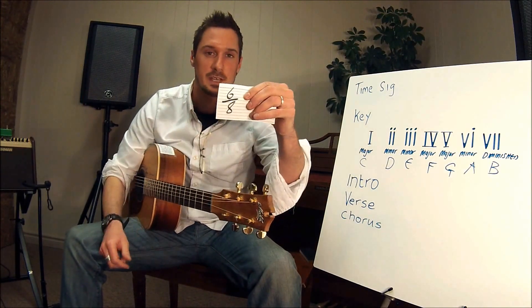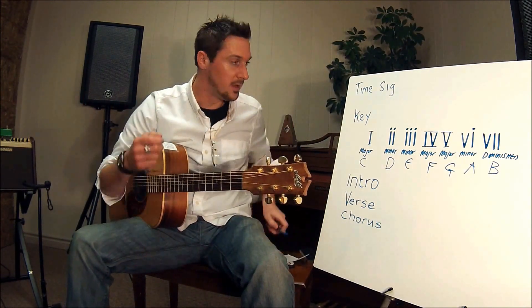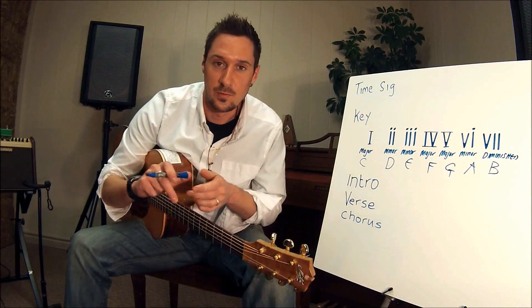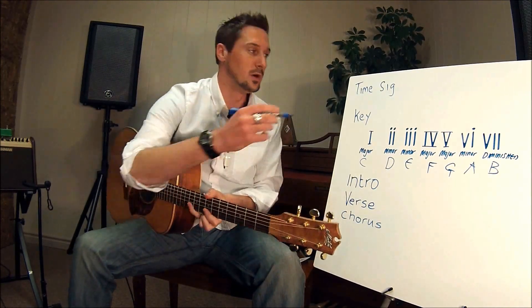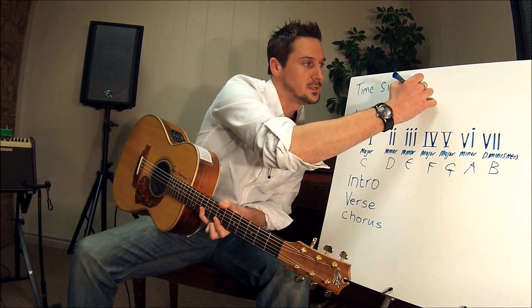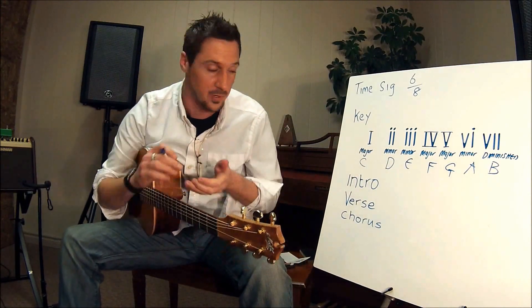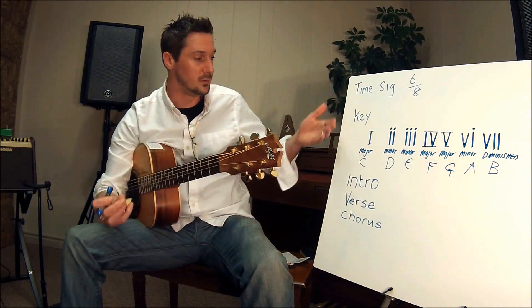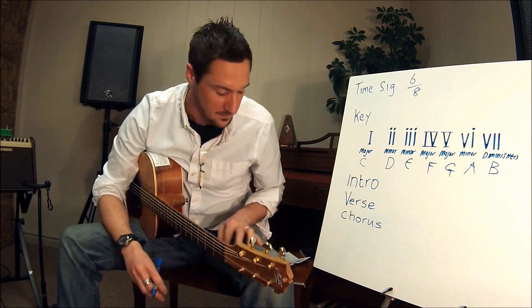This one here is six-eight. So I'm going to feel that: one, two, three, four, five, six — one, two, three, four, five, six. So that's my time signature. We already know the key — we're going to use the chords from the C major scale.